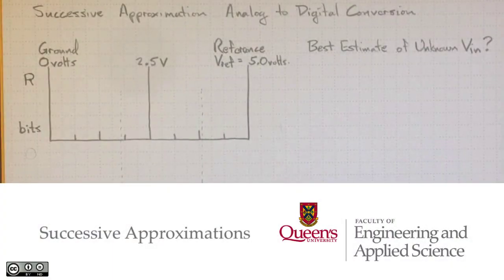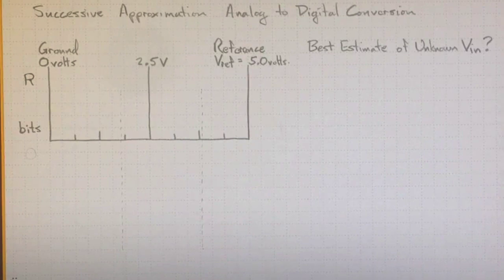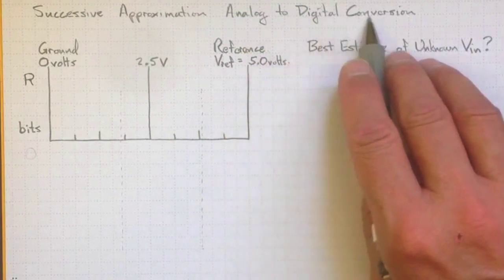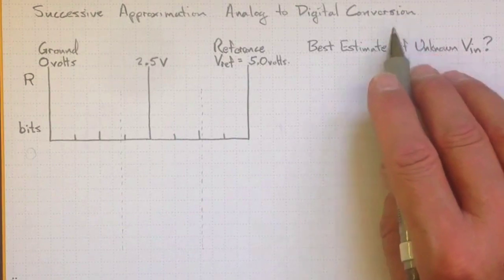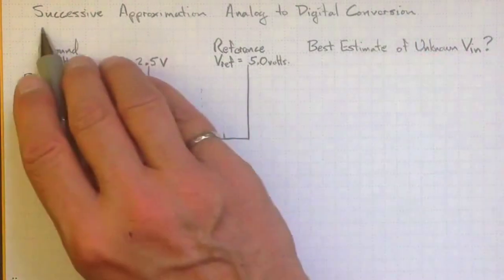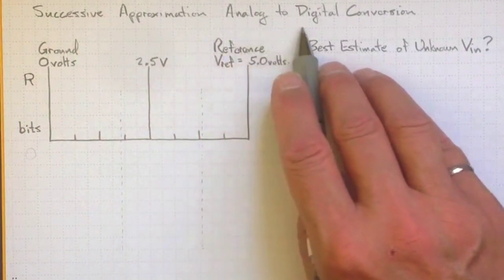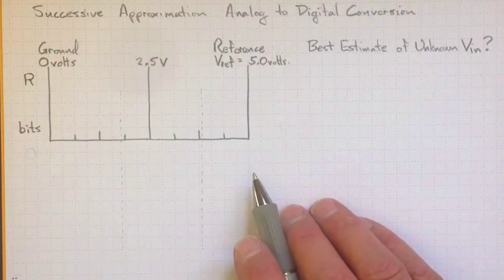Before you can manipulate a measured value with a computer program or a microcontroller program, you need to somehow convert it from an analog voltage to some kind of digital representation so that you can do calculations on it. Most systems use a successive approximation algorithm to convert those analog voltages to digital values. I'm going to outline how that works.